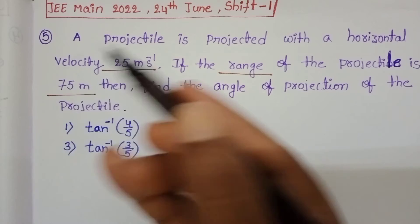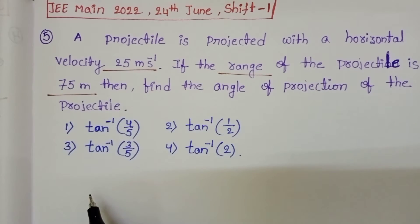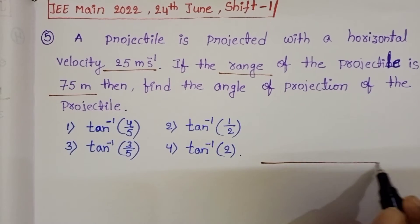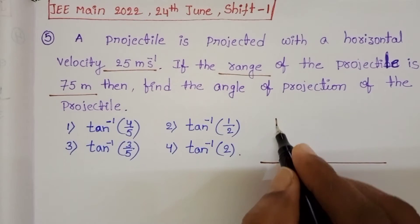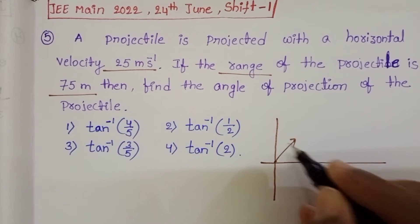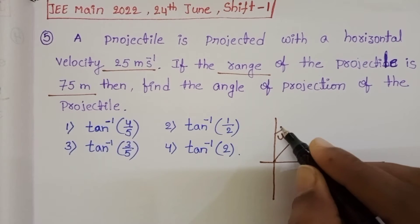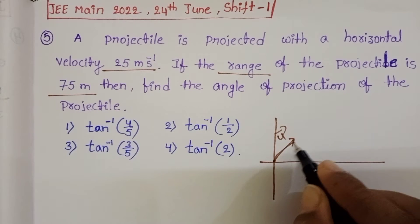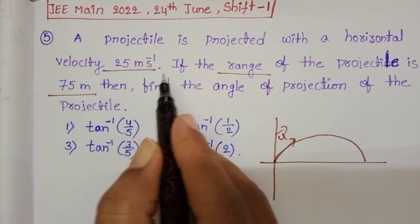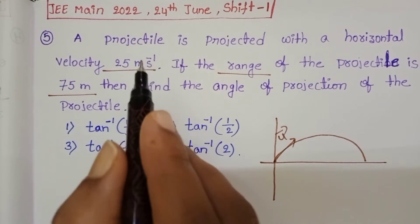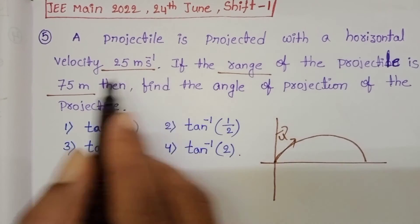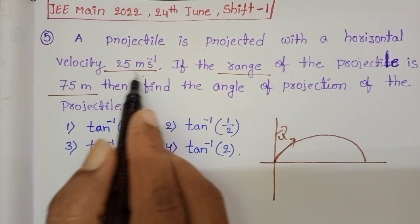If a body is projected with certain initial velocity u, in this question this is not the full velocity — it is the horizontal velocity. So u is resolved into two components: u cos θ and u sin θ.